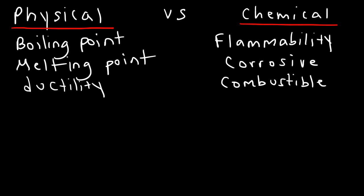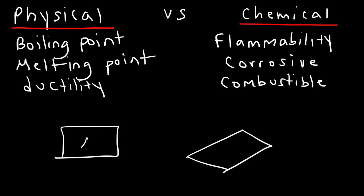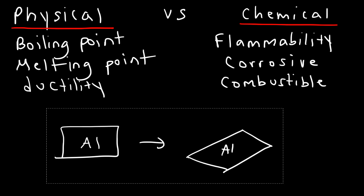Now, what about malleability? If something is malleable, is that a physical property or a chemical property? Let's say if you have a chunk of aluminum — you can hammer it into sheets and get aluminum foil, or just a flat sheet. So, aluminum is malleable. Now, regardless if you have a large chunk of aluminum metal or a flat sheet, it's still aluminum. The chemical identity is the same. So, if you take a chunk of aluminum and turn it into a flat sheet, you haven't changed the chemical identity of the substance. This is associated with a physical change. So, malleability is a physical property.